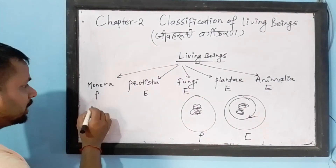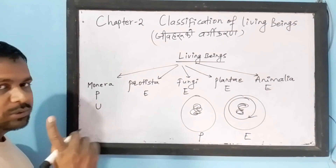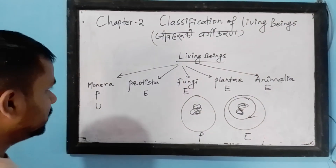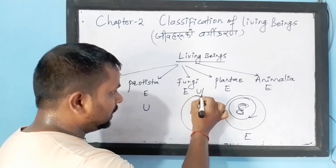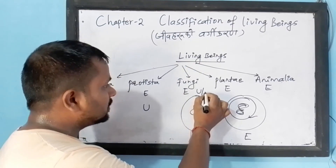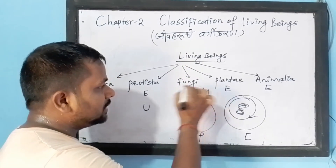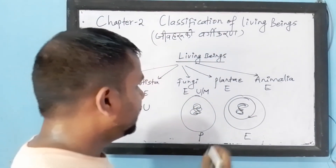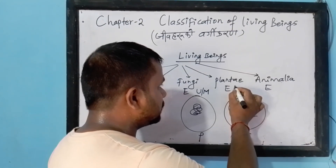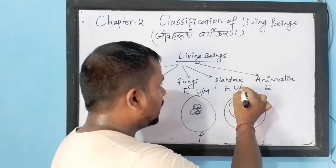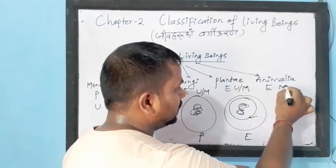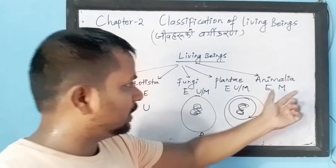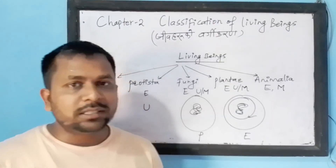Another basis was whether organisms are unicellular or multicellular. All organisms in Monera were unicellular. Protista were also unicellular. Some of the Fungi were unicellular, like yeast, and some were multicellular, like molds. Some plants were unicellular like algae, and some were multicellular. All animals were multicellular and were kept in the Animalia group.